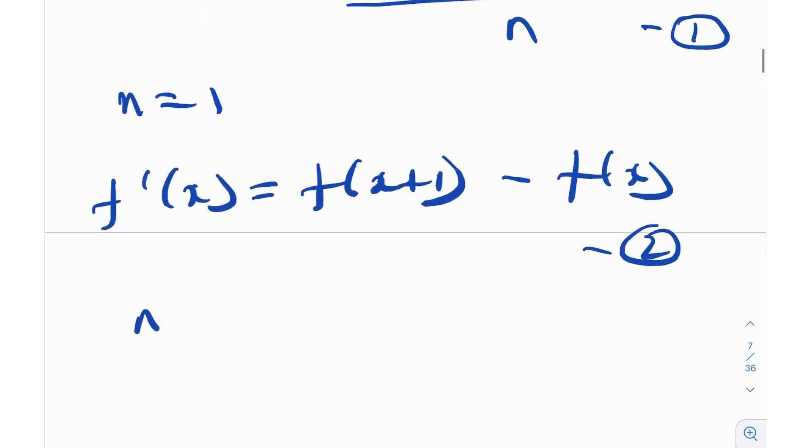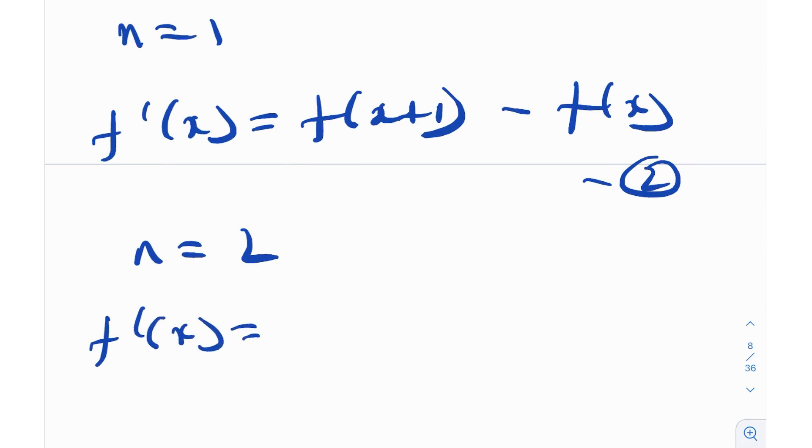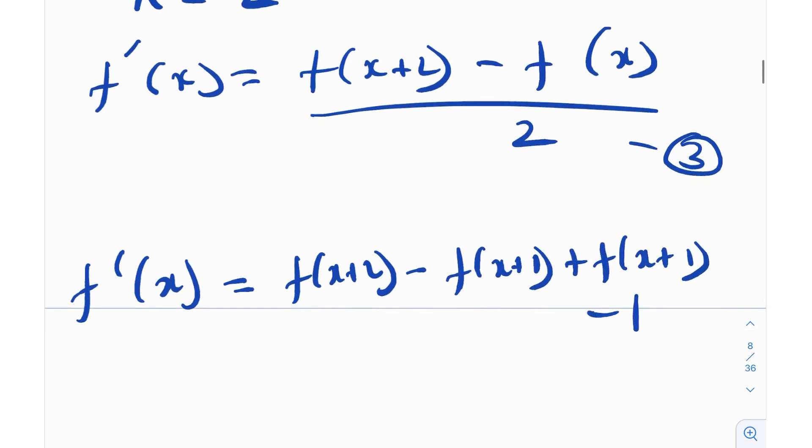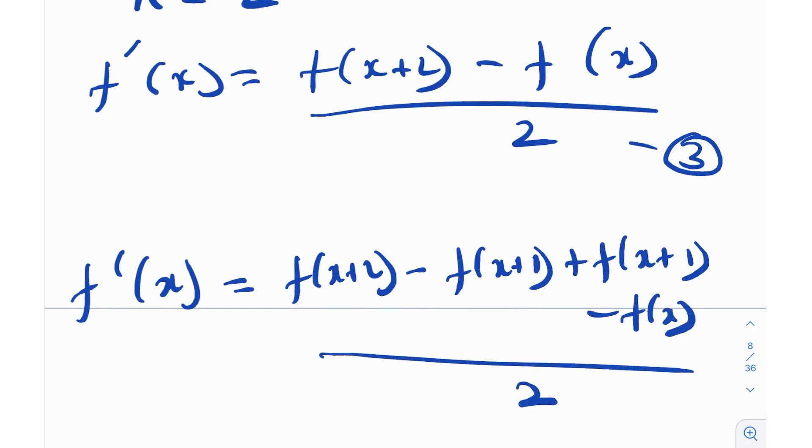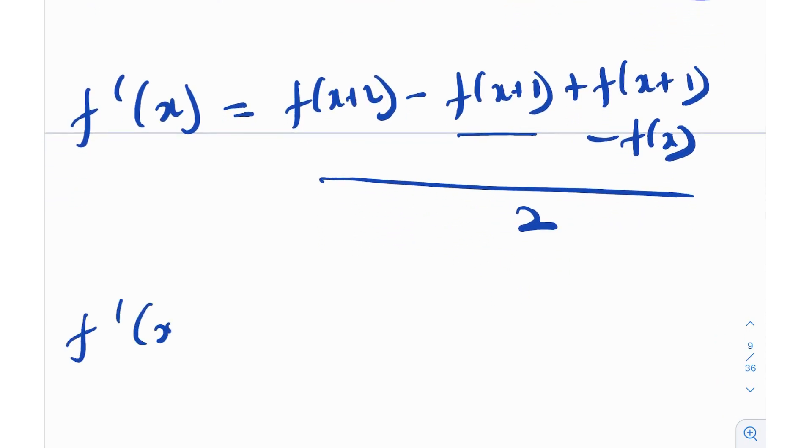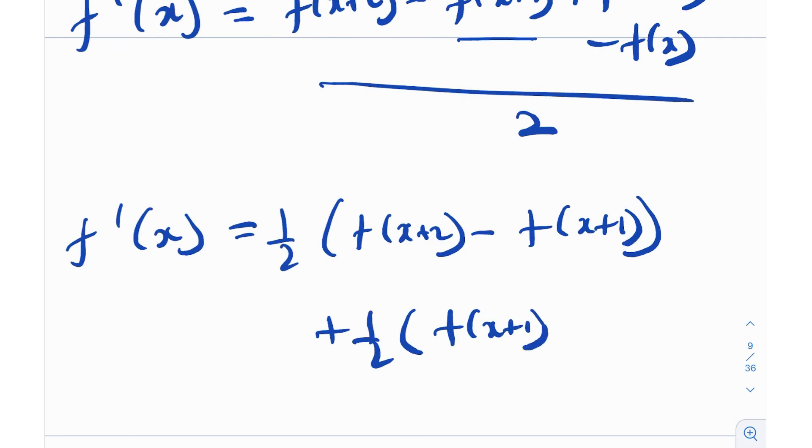And maybe let's just put in n equals 2. So when I do that, I'll get f'(x) is equal to f(x+2) minus f(x) divided by 2. I think that should be pretty clear. Now there's actually something cool that I can do maybe in this equation number 3. So I can write f'(x) as [f(x+2) - f(x+1) + f(x+1) - f(x)] whole divided by 2. I really did nothing but I just added and subtracted this f(x+1) quantity. So I added and subtracted that and maybe we can just split up this right hand side. I'll get half of f(x+2) minus f(x+1) plus half of this other thing as f(x+1) minus f(x).